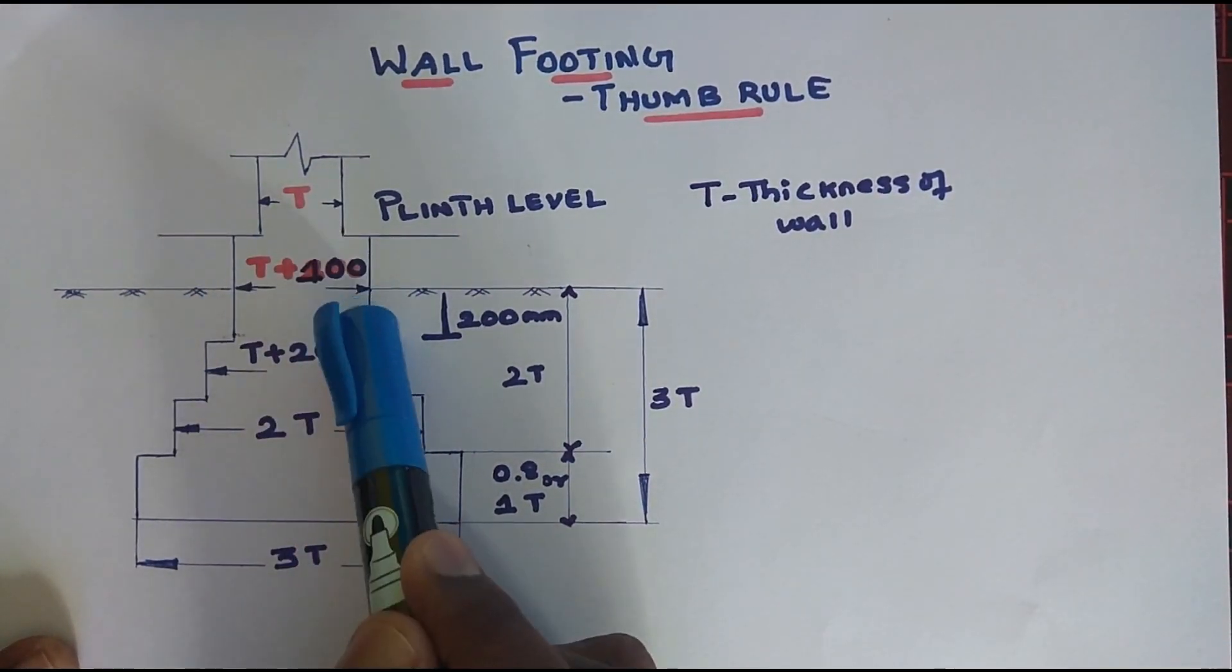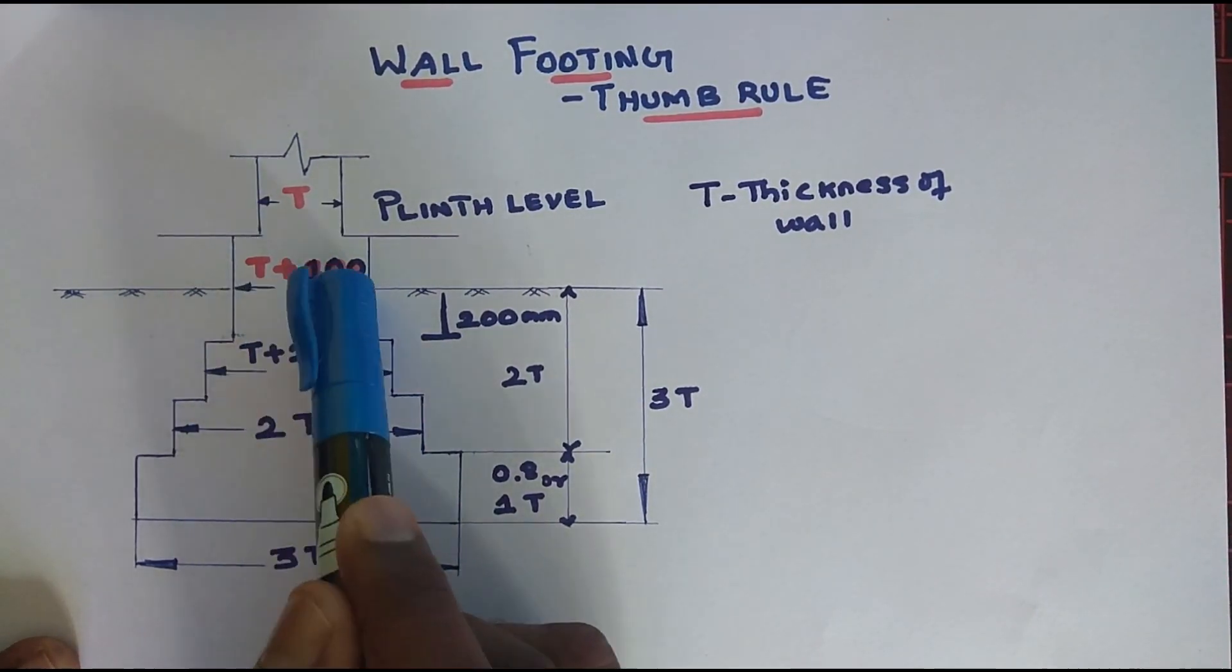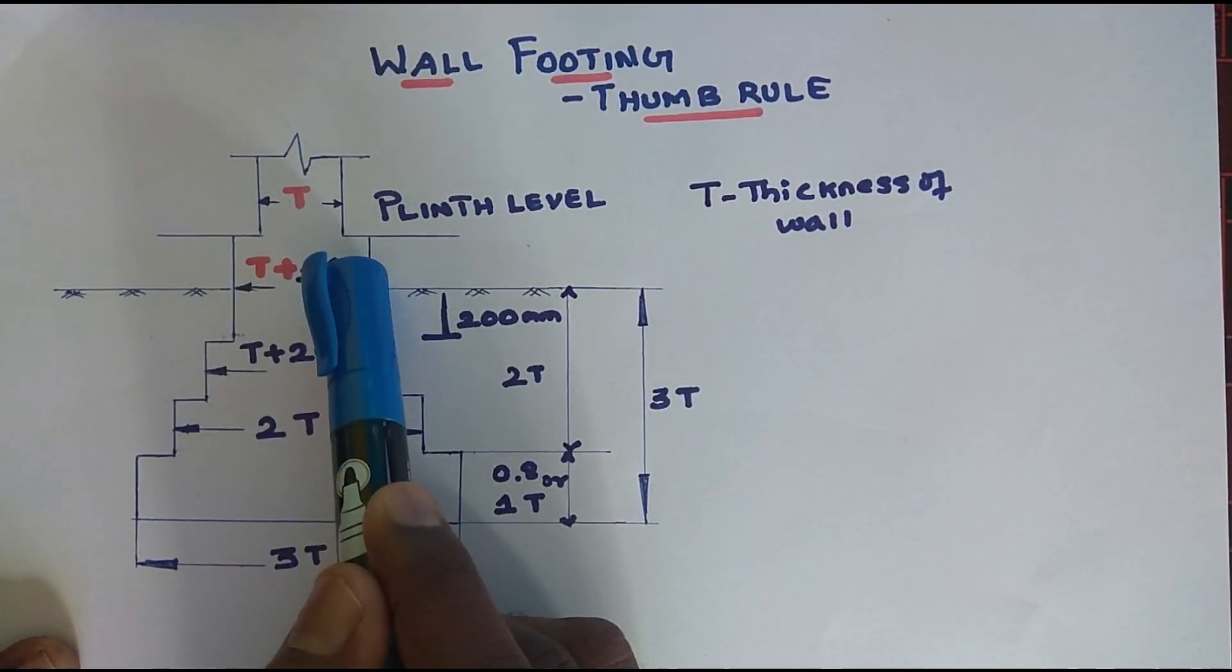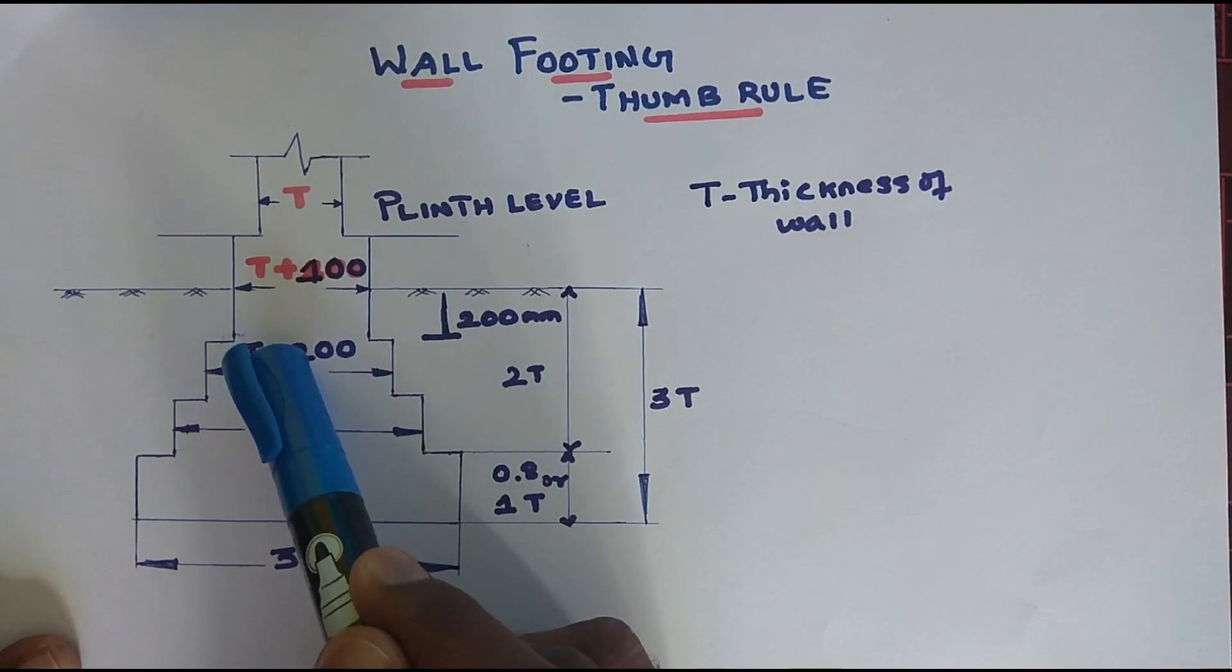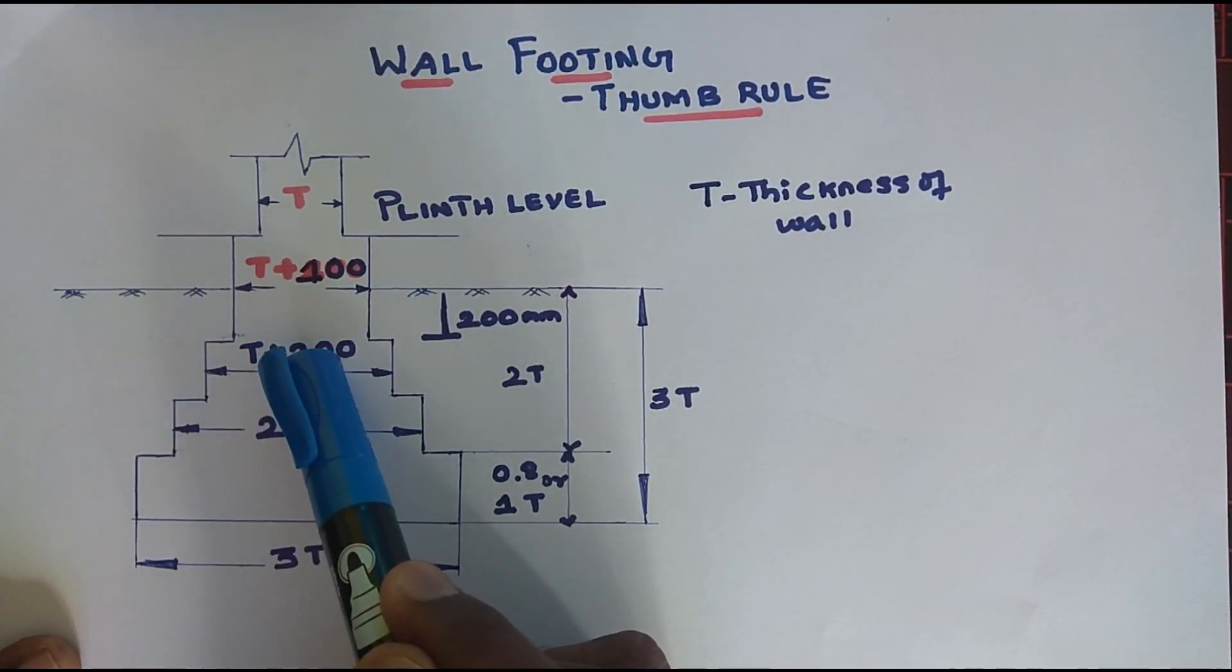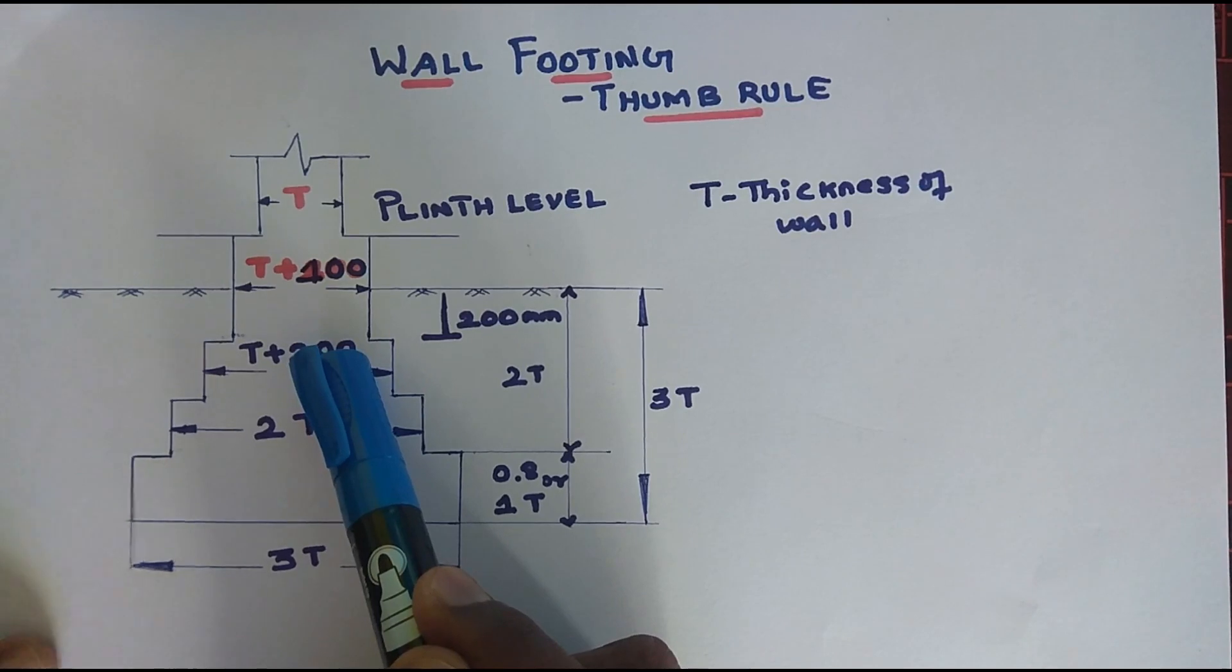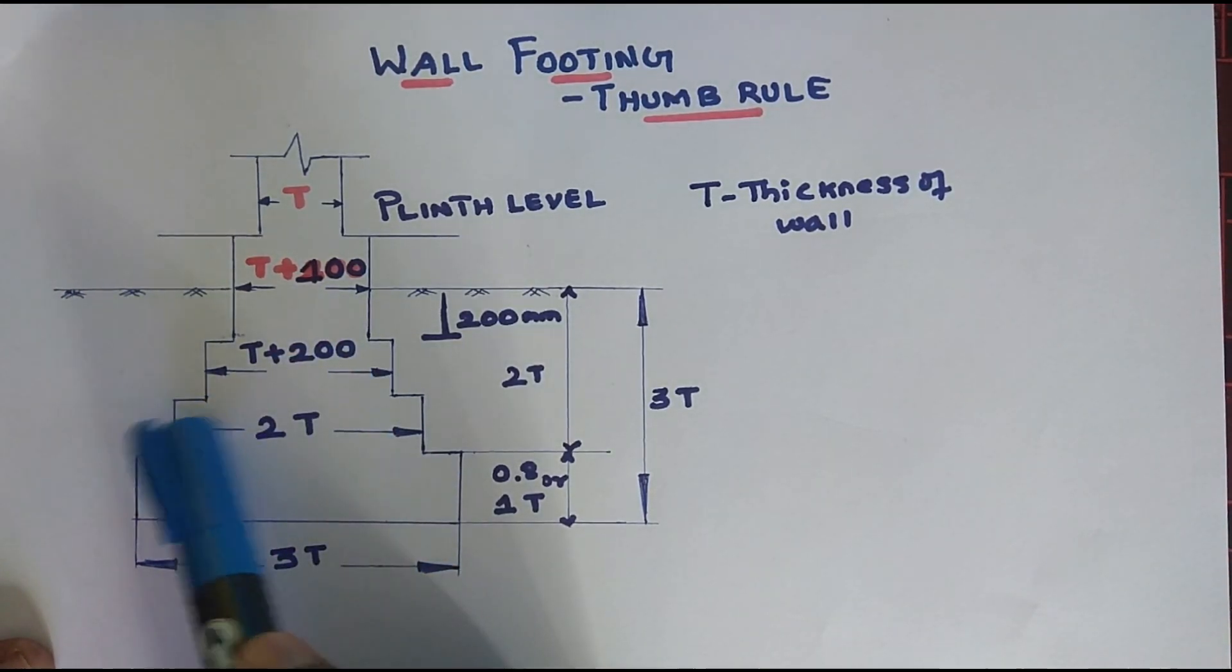For the footings, the first step is T plus 100mm. We add this width. T plus 200mm. We add the thickness of 200mm for the second step.